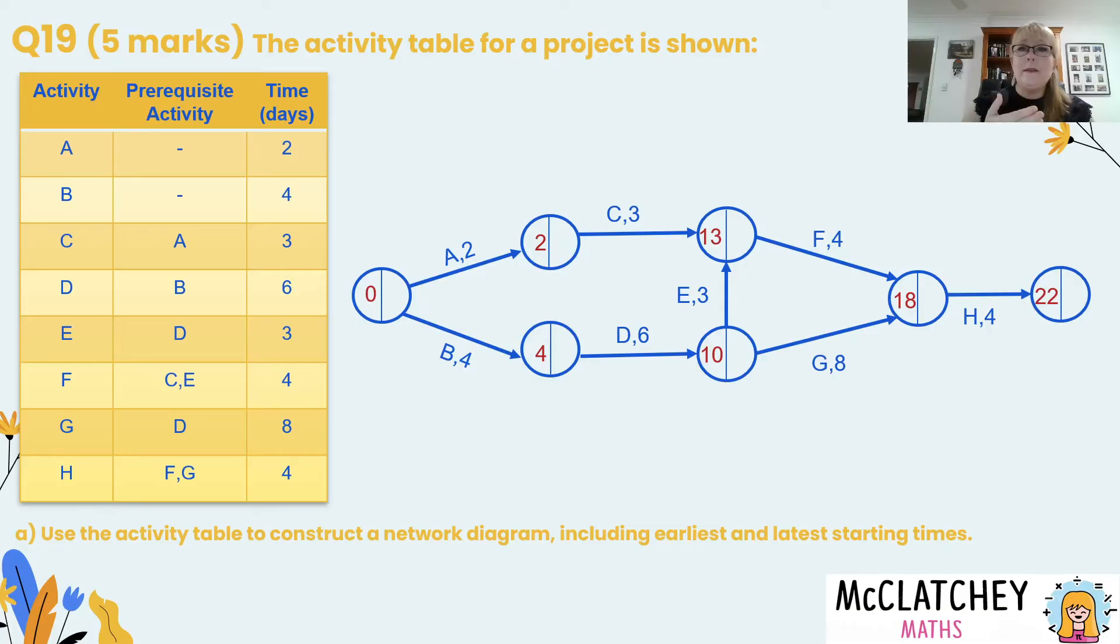Now we need to backward scan through the network. So the last vertex has the same number in it twice and now we simply move backwards. Well the first one is pretty straightforward. We take 4 away from 22 we get 18. Now we need to go through different pathways in the network.